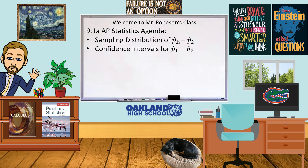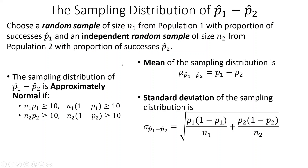We're going to first take a look at what the sampling distribution is like when we have two proportions, then look at how to make confidence intervals. It's very similar to what we were using before — it's just now we have double everything. We need two independent random samples: one of size N1 from population 1, another of size N2 from population 2. They might be from the same population but still need to be independent, giving us P-hat 1 and P-hat 2.